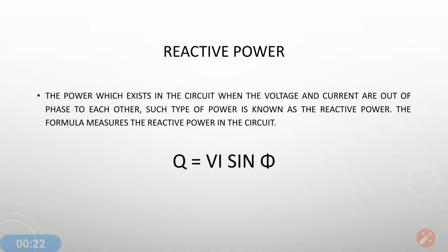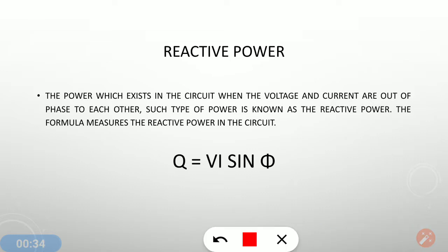By definition, reactive power exists in case of two elements only, that is L and C. Because in case of L, the current lags by 90 degrees, and in case of C, the current leads by 90 degrees. So such type of power exists only when there is L or C, or both, in the circuit.